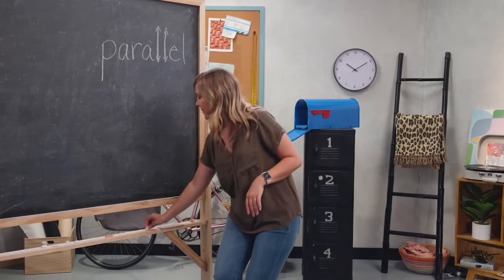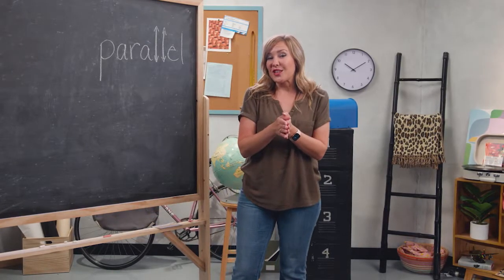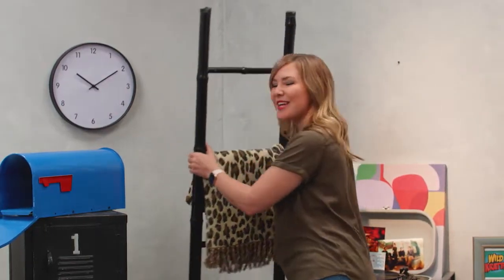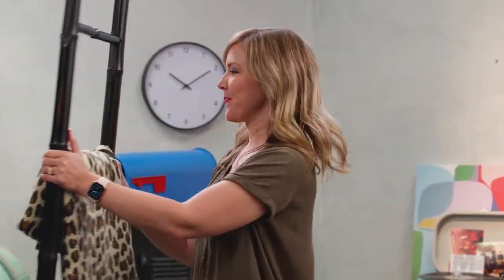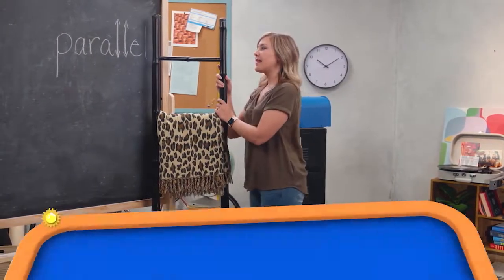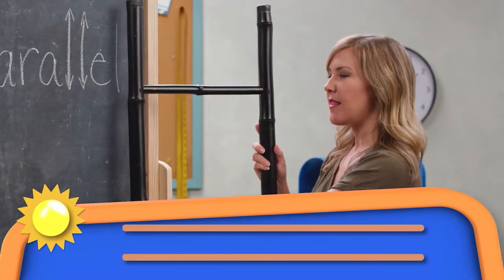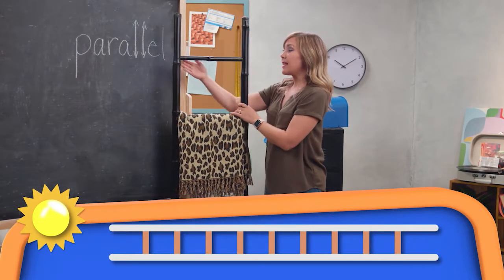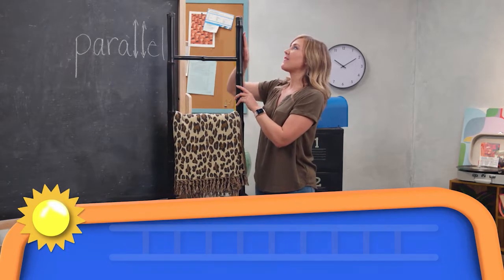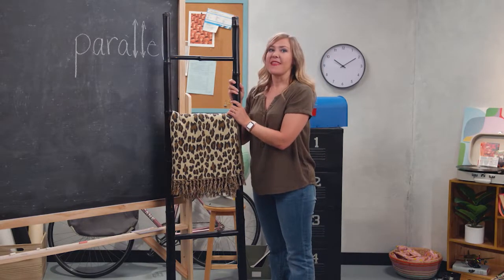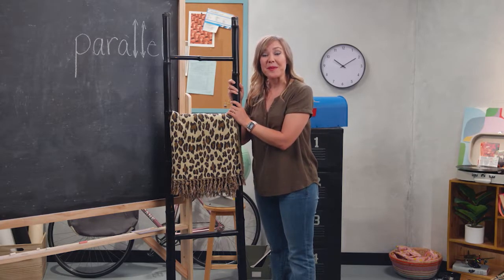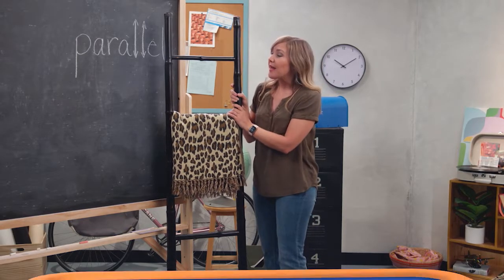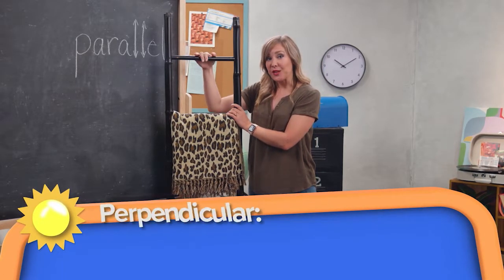We were actually just looking at a set of parallel lines while I was hanging up the blankets — look at the ladder as an example. When we think about parallel, I can think about the left side of the ladder and the right side of the ladder. These are two parallel lines — they run next to each other, and even if they went on forever in both directions, they would never touch. They will always be the same distance apart and never meet.